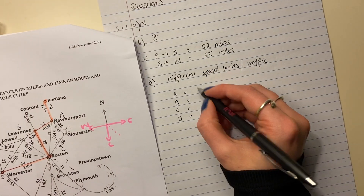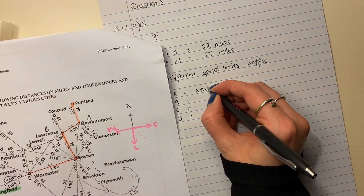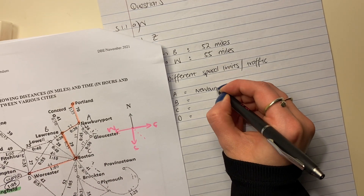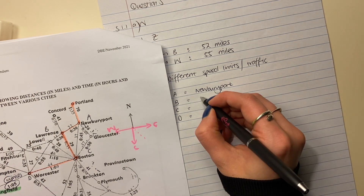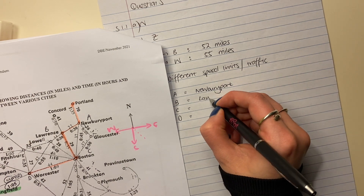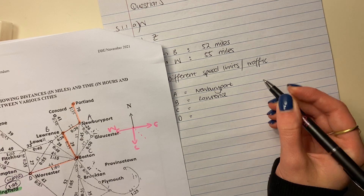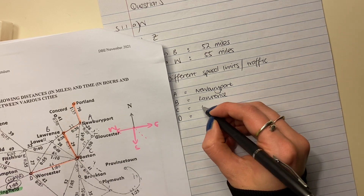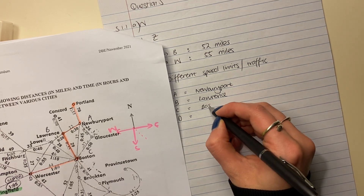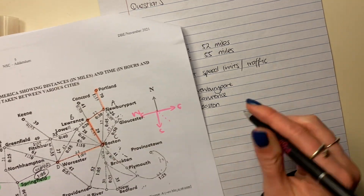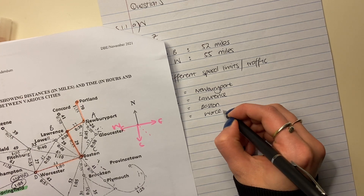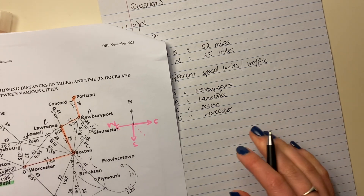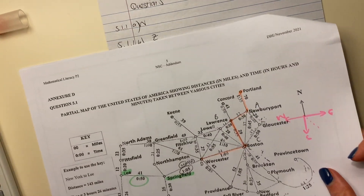A is going to be Newburyport, B is going to be Lawrence, C is going to be Boston, and D is going to be Worcester. It's such a cool question — we did say this was cool.